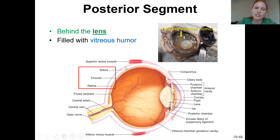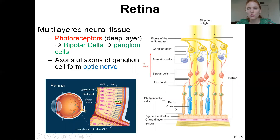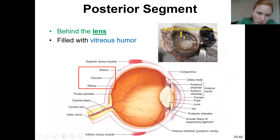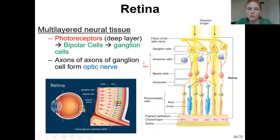The retina is sometimes called the neural layer because it has three types of neurons. The photoreceptors — rods and cones — are the most interior ones, right up against the choroid. On top of those are the bipolar cells, named because they have two pieces coming off the cell body. Then the bipolar cells synapse with the ganglion cells. Light travels all the way through the cornea, pupil, lens, and vitreous humor, then through the ganglion and bipolar cells before activating the photoreceptors.